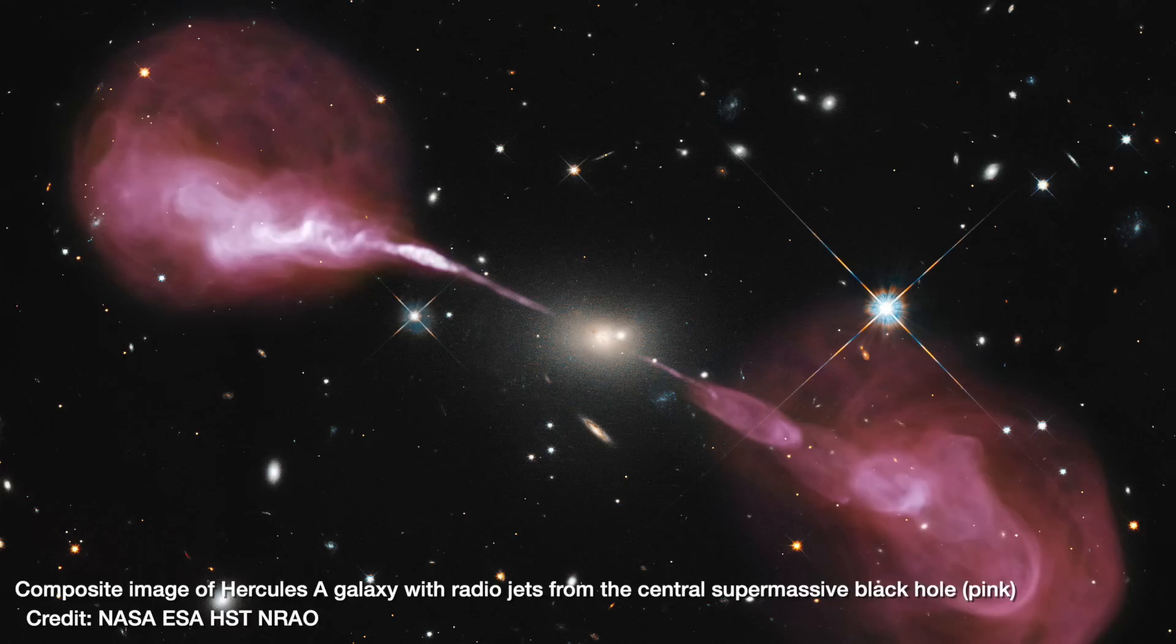For a long time, people thought that quasars might have been white holes, but it turned out that actually they were just supermassive black holes that were accreting so much matter that the matter started to glow and could be seen at huge distances in the universe.